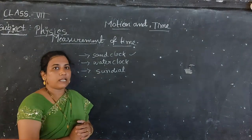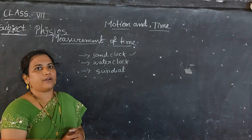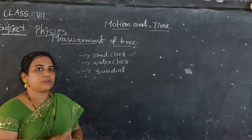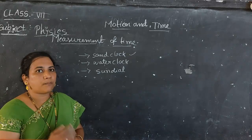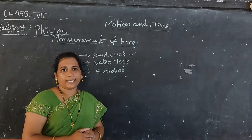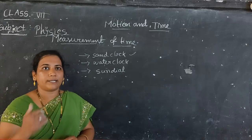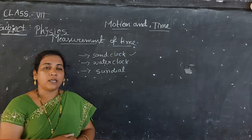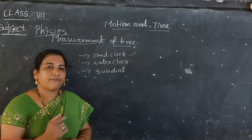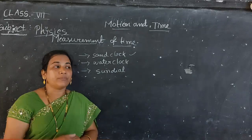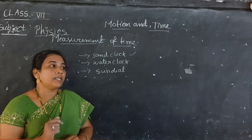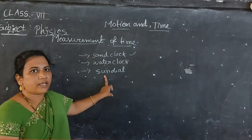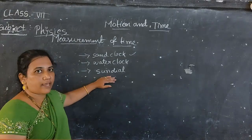Coming to the sundial — it works based upon the formation of shadows. When we are walking outside, we observe our shadows. The shadow formation changes based on the time of day. In the early morning, around 7 or 8 o'clock, your shadow is long. At exactly noon — 12 or 12:30 — your shadow falls directly beneath you at your feet. In the evening, the shadow becomes long again. This change in shadow formation is how the sundial measures time.